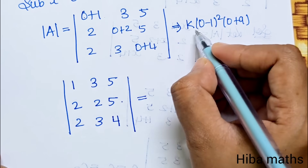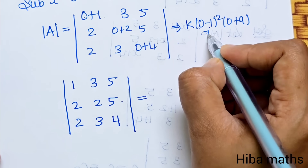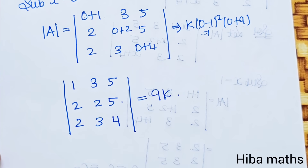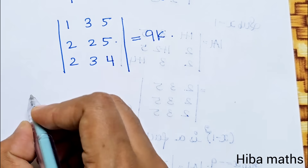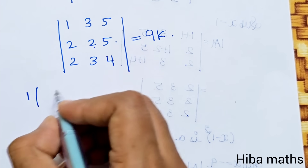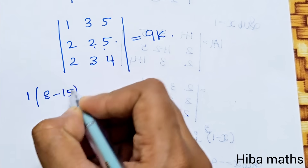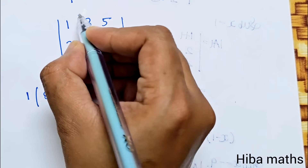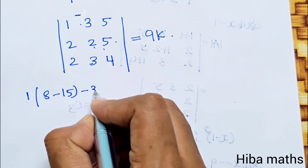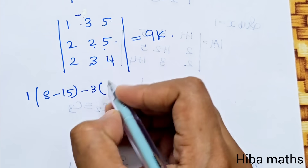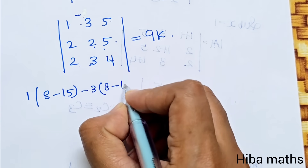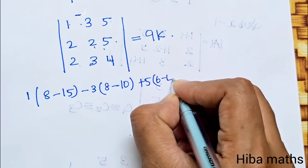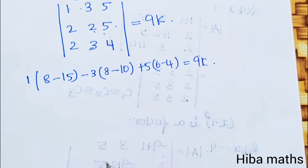This equals k into (0-1)² into (0+9), which is k into 1 into 9, equal to 9k. Expanding the determinant: 1×(2×4 - 5×3) - 3×(2×4 - 5×2) + 5×(2×3 - 2×2).